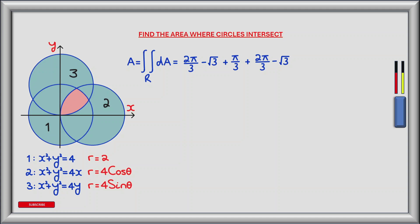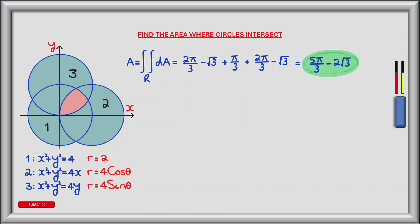All that remains is to sum the results. We have 2 pi by 3 minus root 3, plus pi by 3, plus 2 pi by 3 minus root 3, which gives a final answer of 5 pi by 3 minus 2 multiplied by the square root of 3.